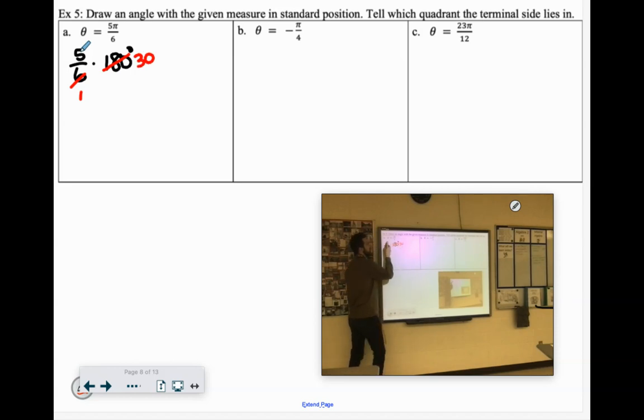Like 6 goes into 180 degrees 30 times. So it's just 5 times 30, which will be 150 degrees. So again, 5 sixths of π would be almost all the way to 1π, which makes sense because 1π is 180 degrees. So this would be most of the way there.